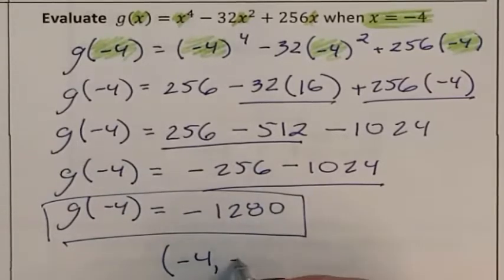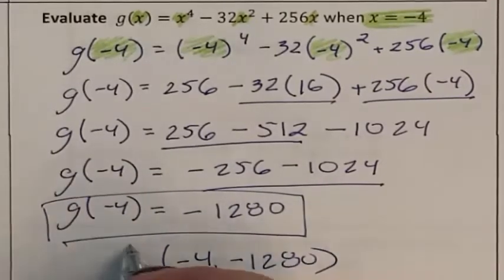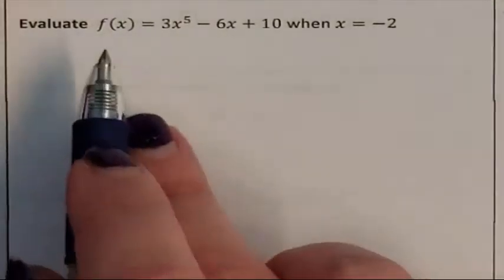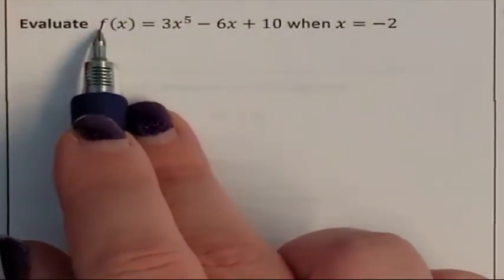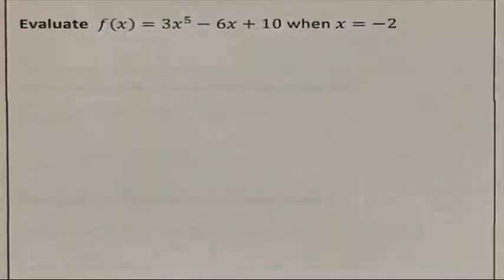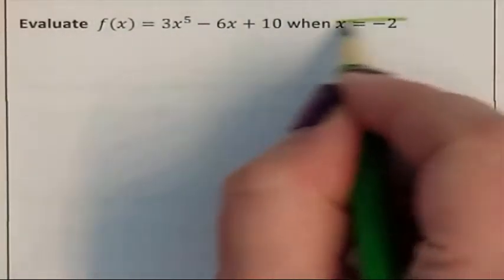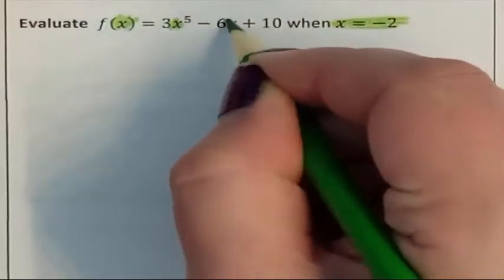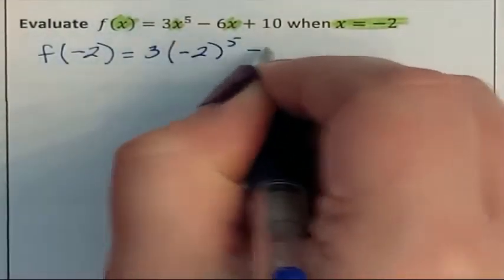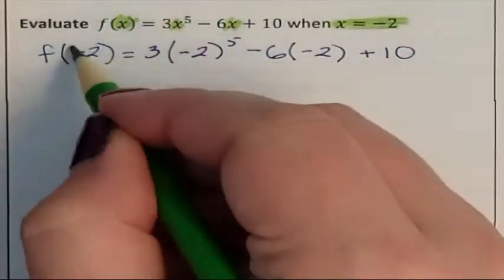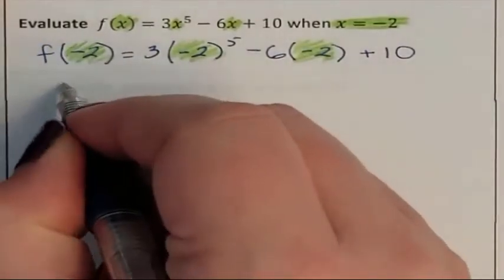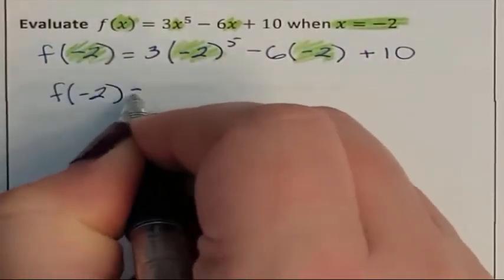Your second problem. I'm being asked to test the f rule when x was negative 2 and here is my f rule. So I'm going to type in negative 2 for all of these x values.